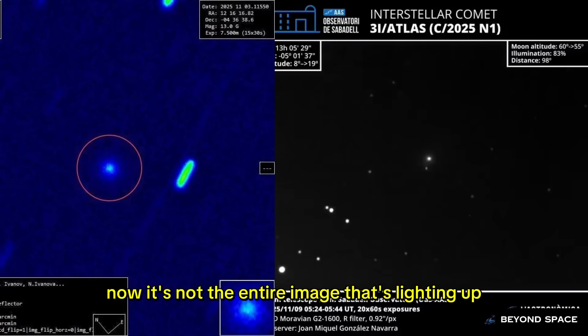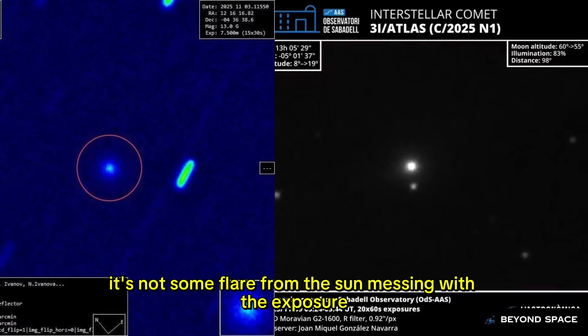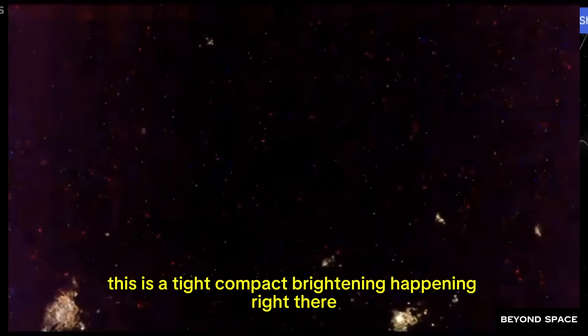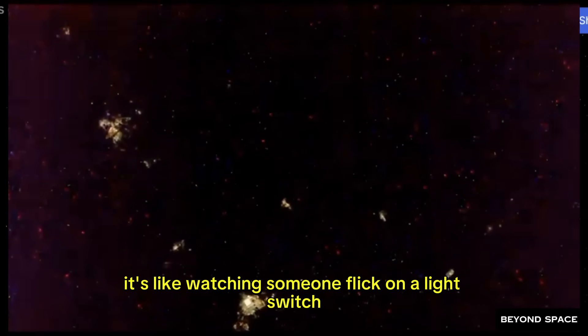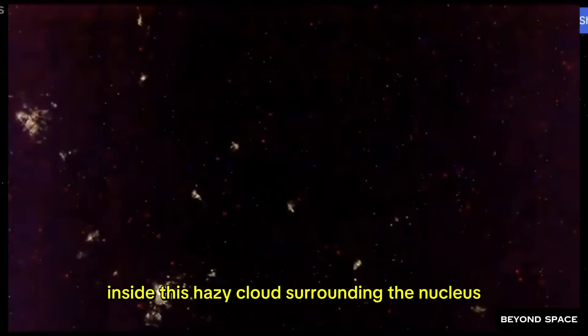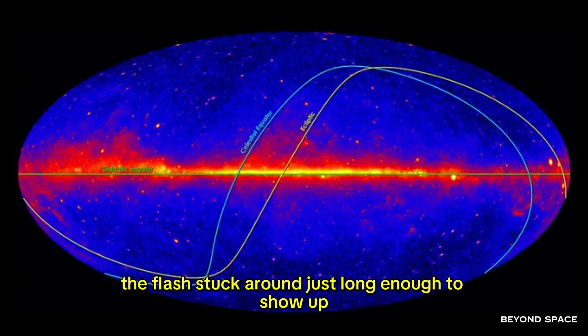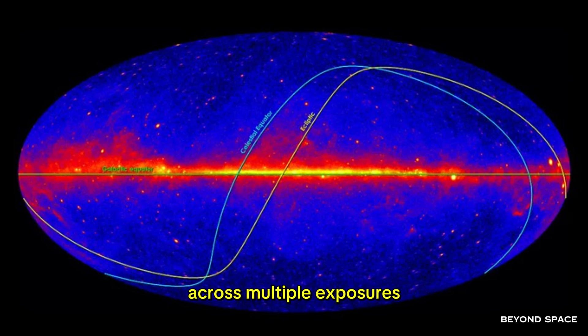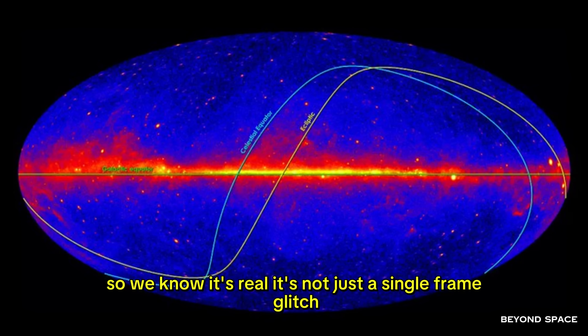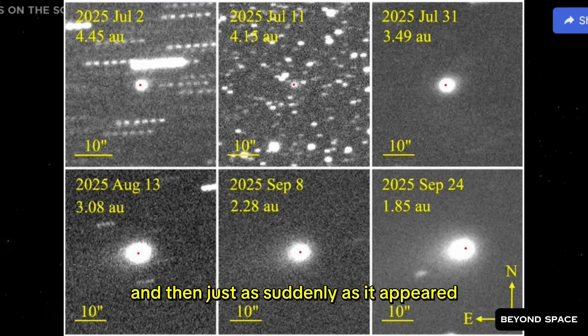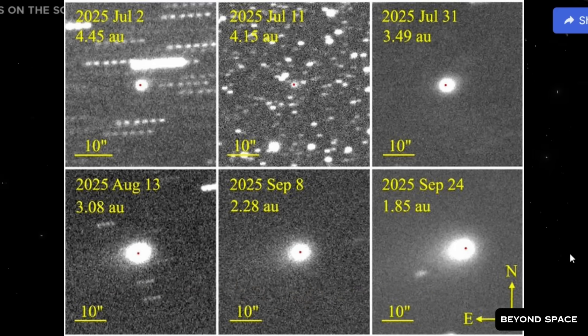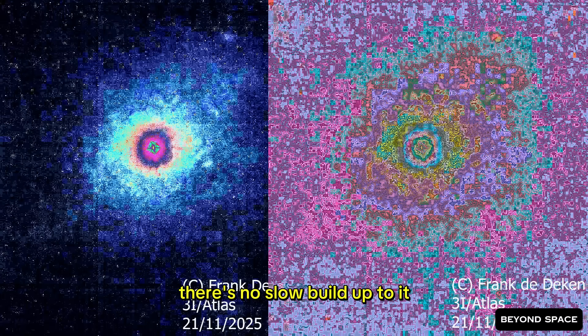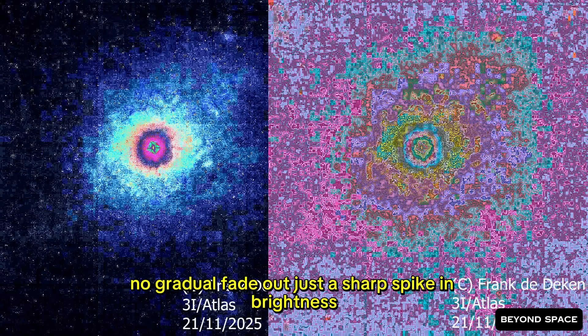Now, it's not the entire image that's lighting up. It's not some flare from the sun messing with the exposure. This is a tight, compact brightening happening right there in the inner coma of the comet. It's like watching someone flick on a light switch inside this hazy cloud surrounding the nucleus. The flash stuck around just long enough to show up across multiple exposures, so we know it's real. It's not just a single frame glitch. And then, just as suddenly as it appeared, the brightness dropped right back down to baseline levels. Back to where it was before. Like nothing had happened.